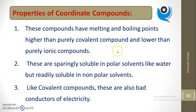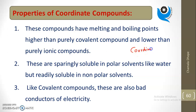Now for the properties of coordinate compounds. First, their melting point and boiling point are higher than purely covalent compounds but lower than purely ionic compounds — they fall in between. So: ionic compounds have the highest melting/boiling points, coordinate compounds are intermediate, and covalent compounds have the lowest.